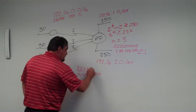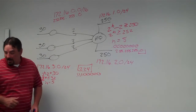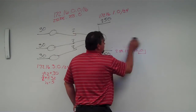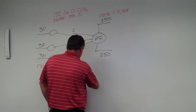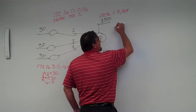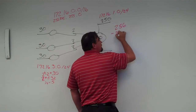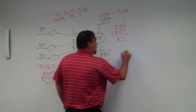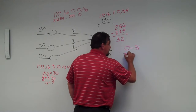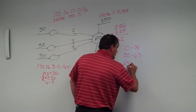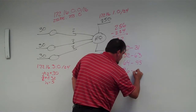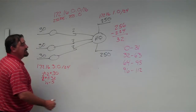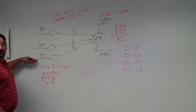Going back to our subnetting math: 256 minus 224 gives a block size of 32. So our ranges in the last octet are 0–31, 32–63, 64–95, 96–127, and so on. We'll start assigning these subnets to each branch office location.